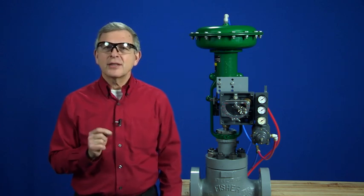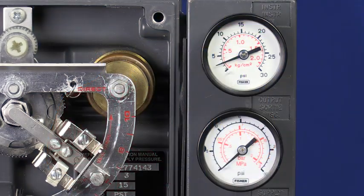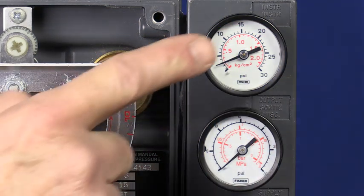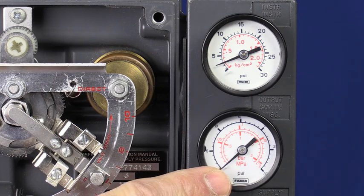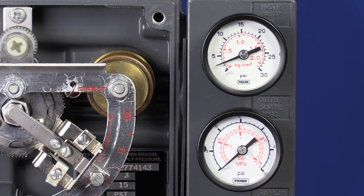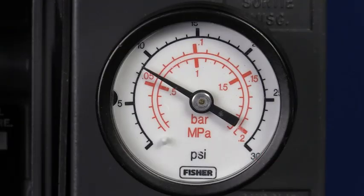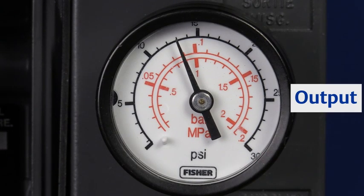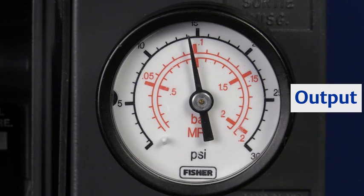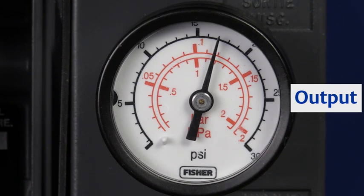Now, let's set the span. In step five, I'll increase the input pressure while watching the output pressure gauge. What I'm looking for here is saturation on the other end of the stroke. Saturation is identified when the output pressure rapidly changes and goes all the way to supply pressure. There it is.